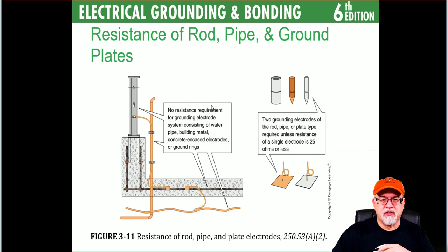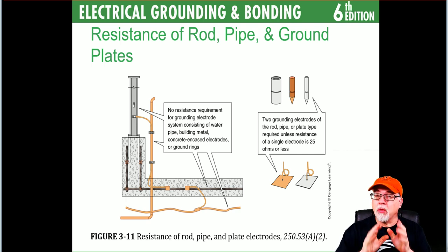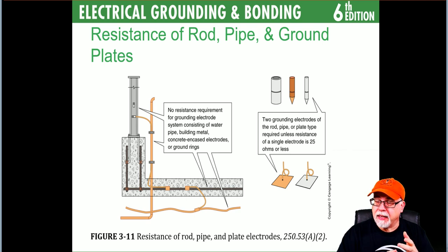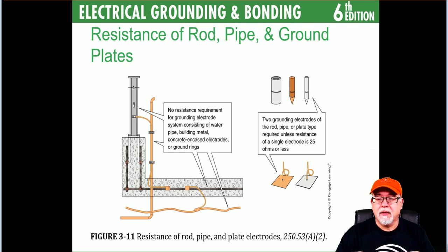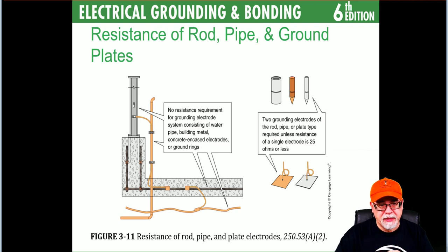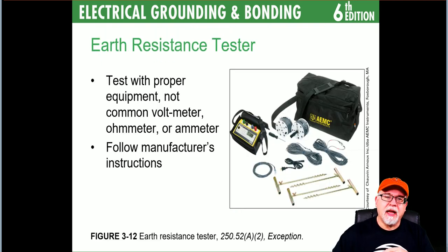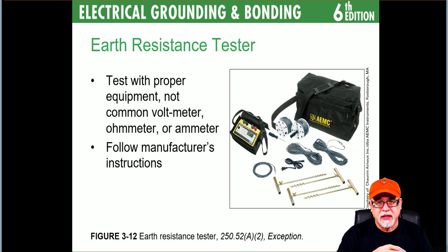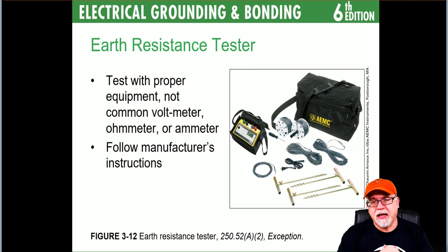The resistance requirement of 25 ohms or less only applies to rods, pipes, and plates — not to other electrode types. Anywhere else the actual resistance could be a thousand ohms and it doesn't require any supplement. Testing requires earth resistance testers; the three-point fall-of-potential method requires enough space on the property because it's all about the spacing of the test probes.